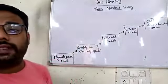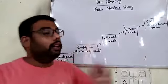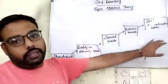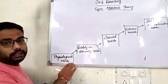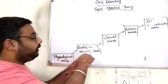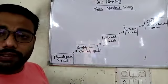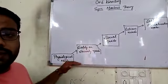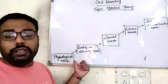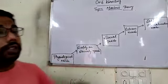Self-actualization need means the employee wants to become something — to achieve what they actually aimed for. That target motivates them to work. Maslow says that once your lower need is satisfied, only then will you move to the higher need. If physiological and safety needs are not satisfied, social needs cannot motivate you. When one need is satisfied, the next higher need becomes a motivator.